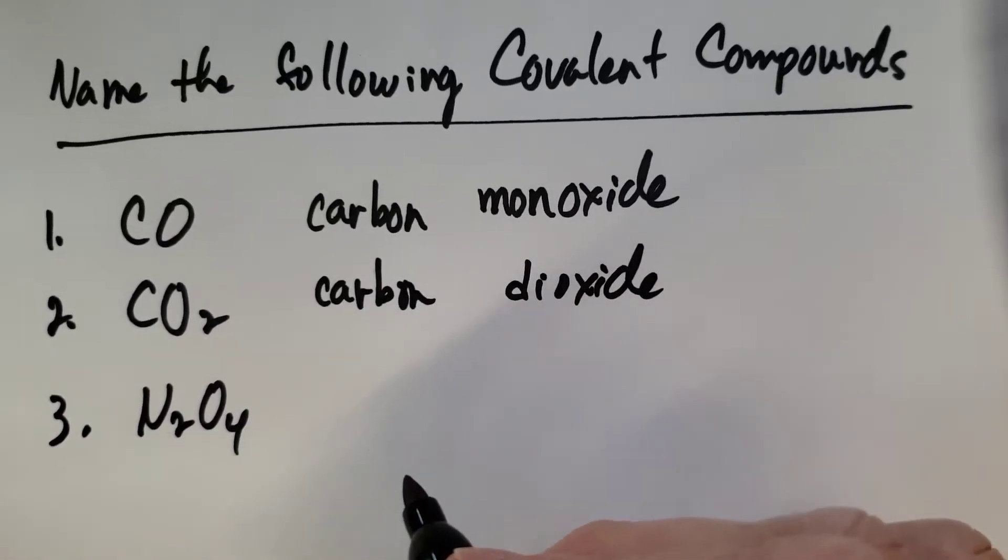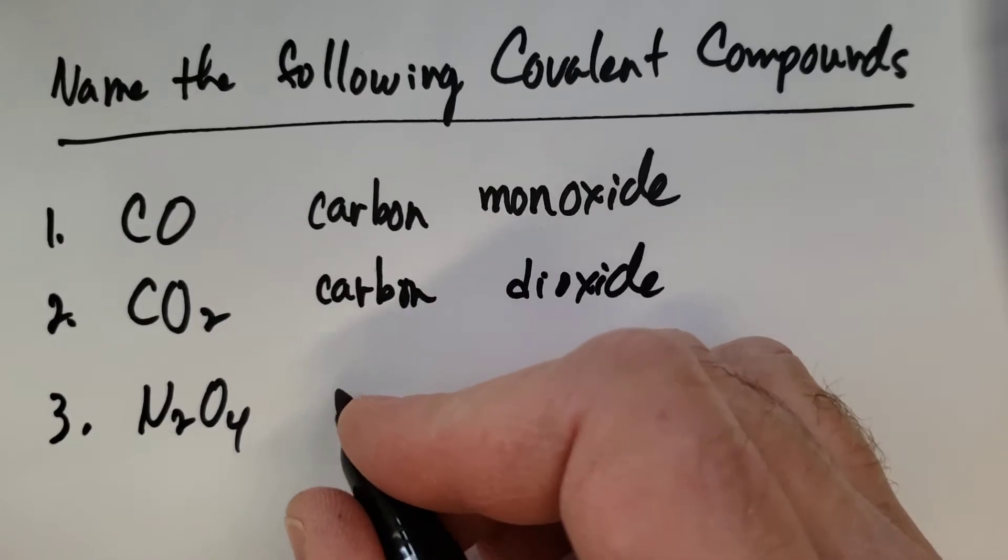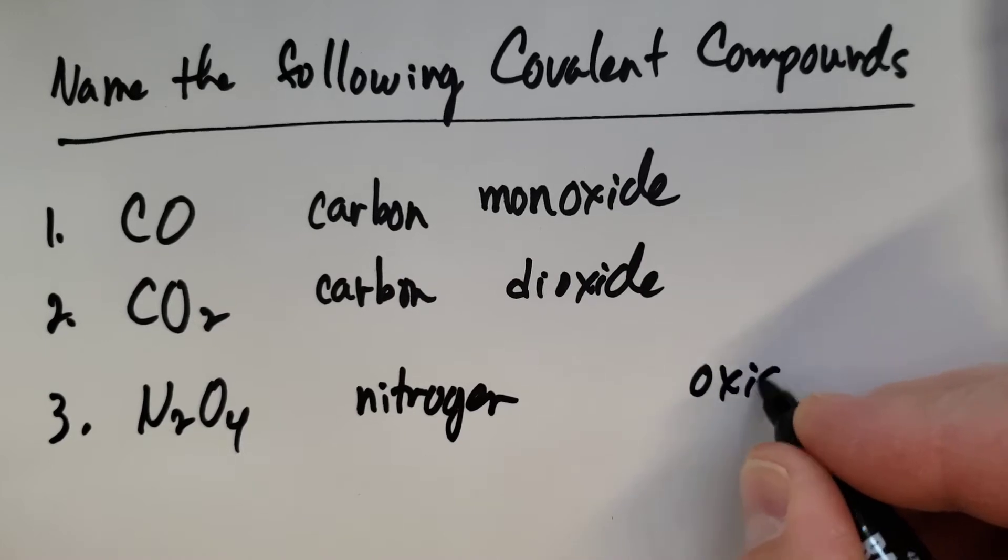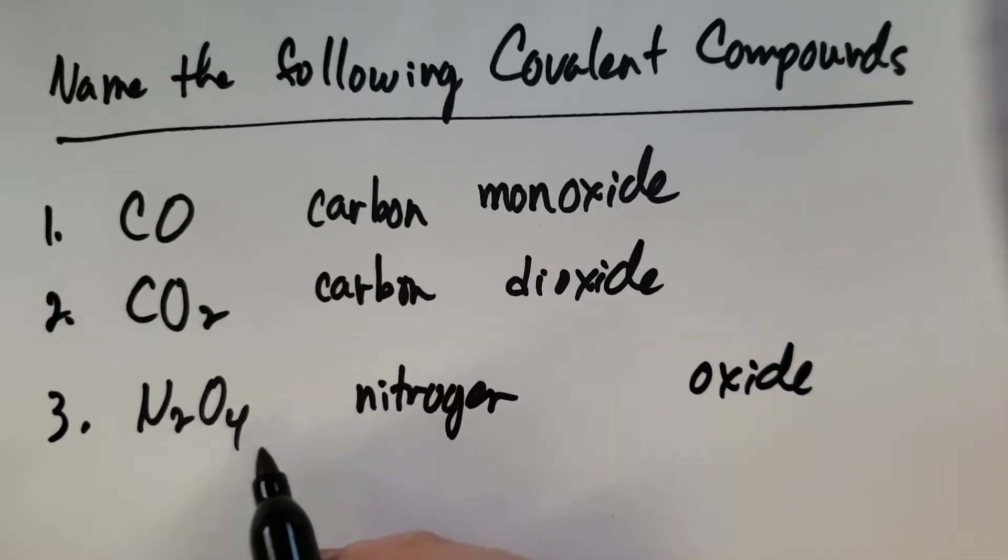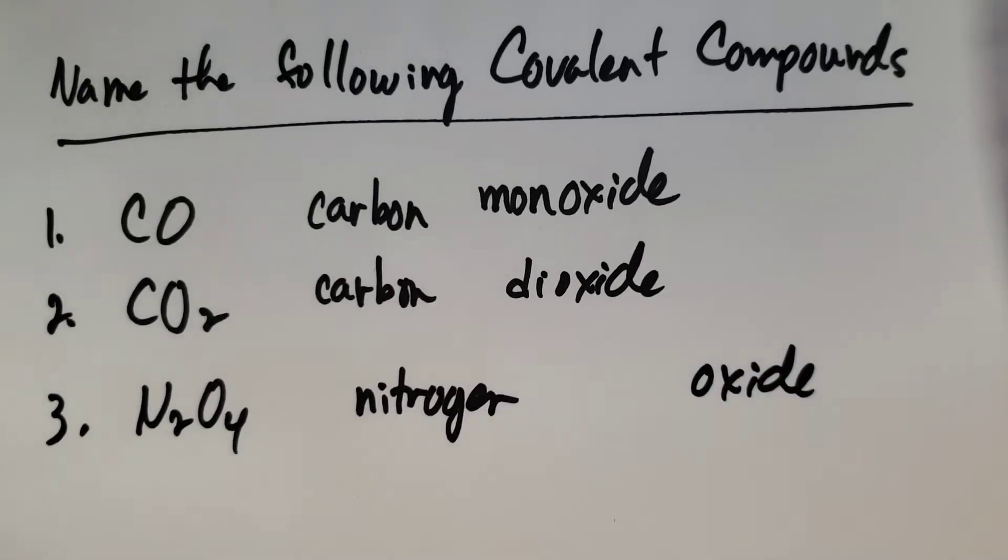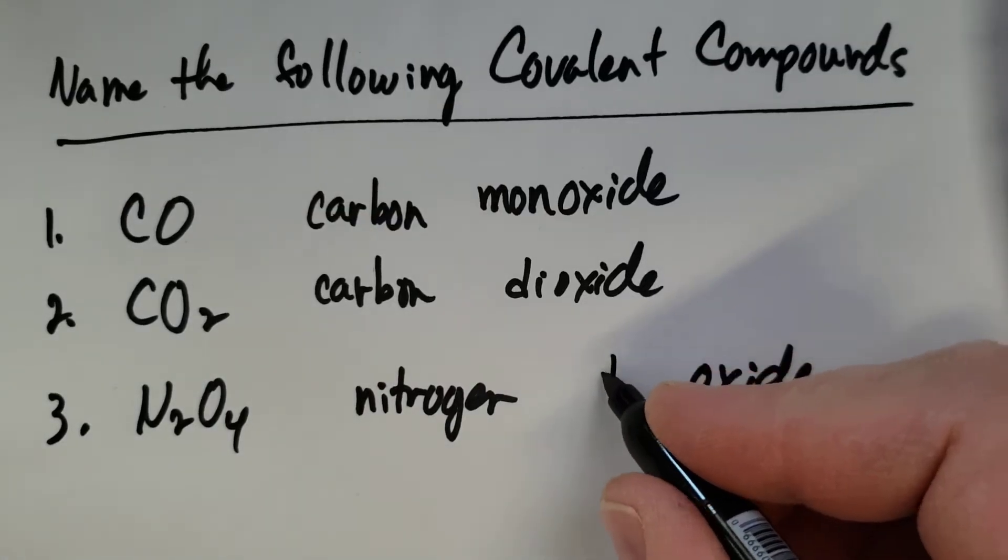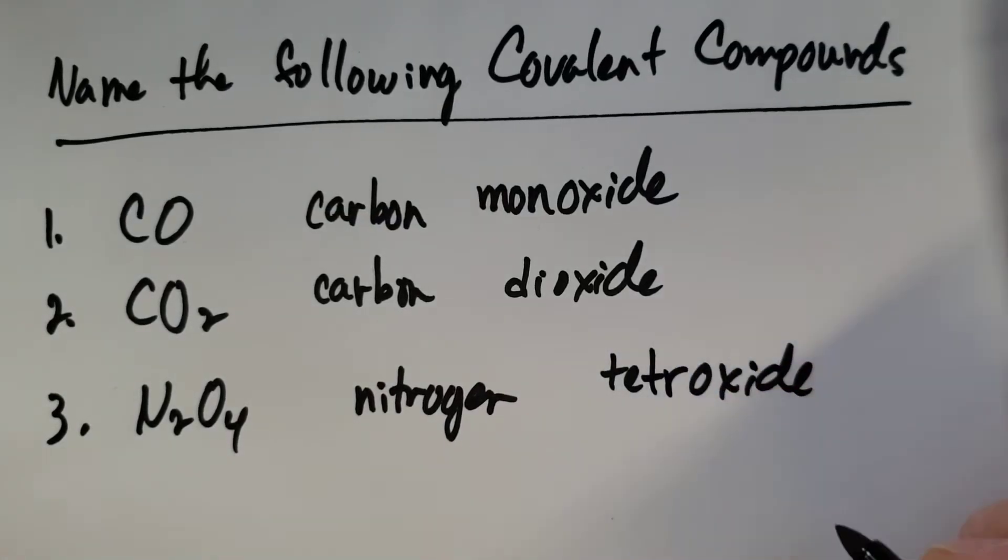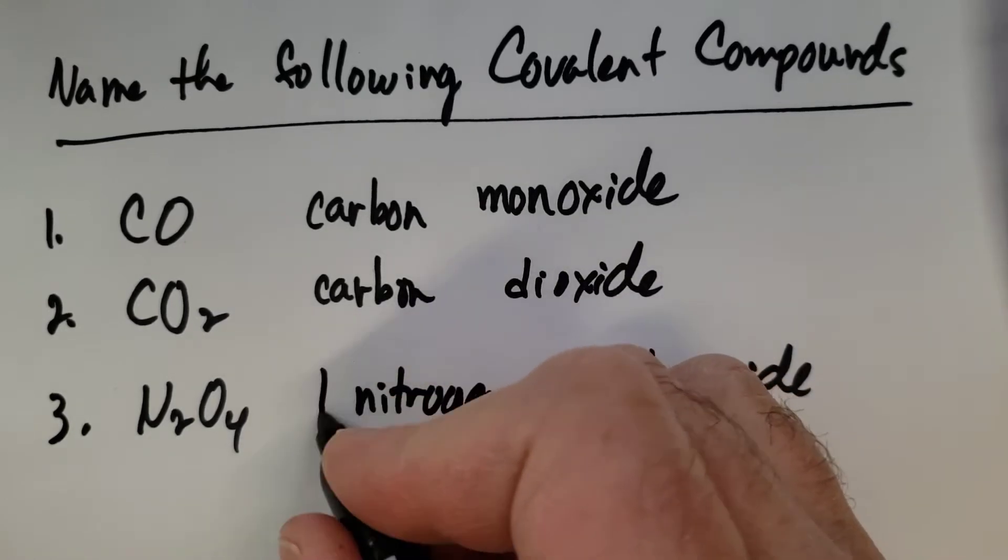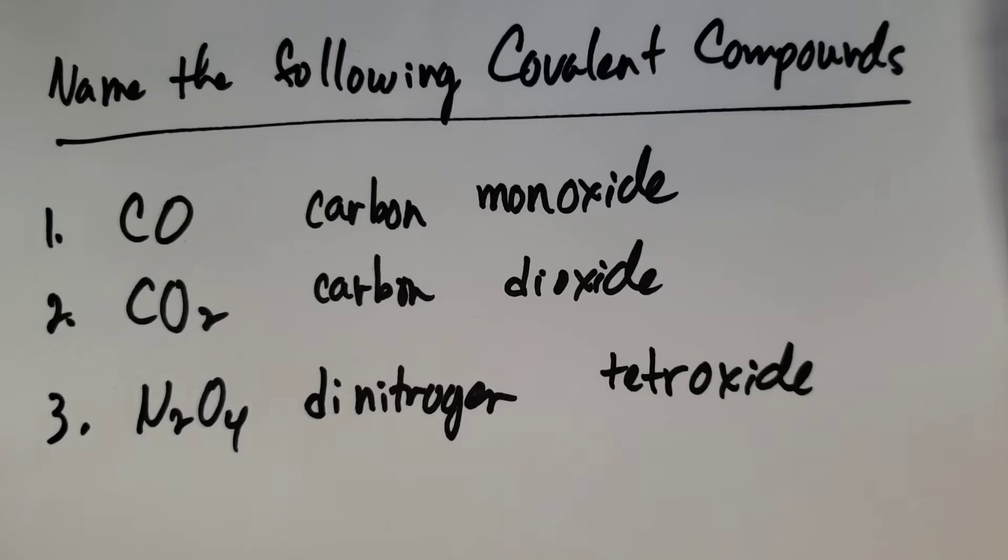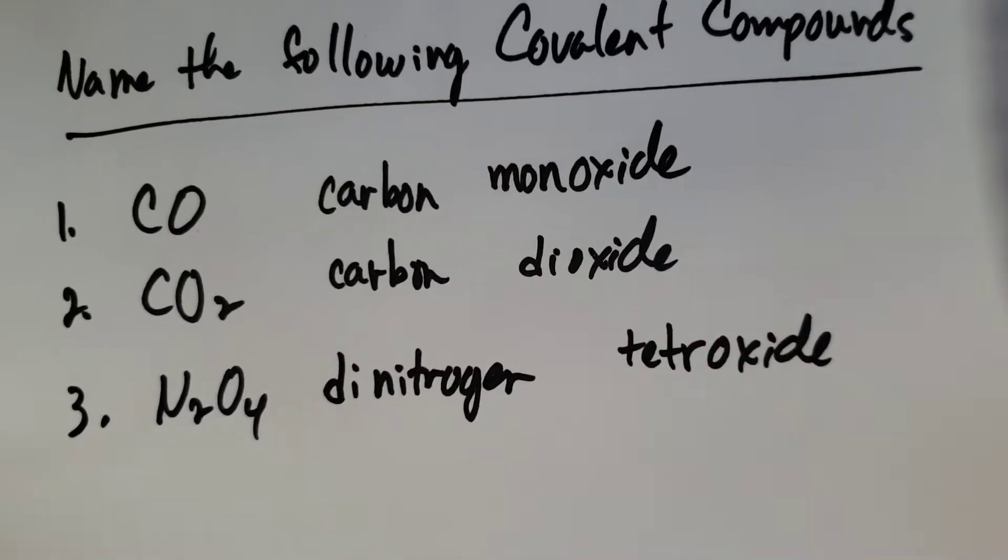Over in this last one here, we have nitrogen. And of course, we have oxide. And I see here I have four. So that is tetra. Again, I'm going to drop the A off. Tetroxide. And of course, dinitrogen. So that's how given the formula, how we name it.